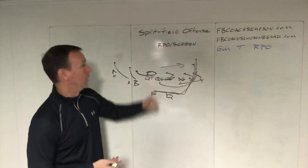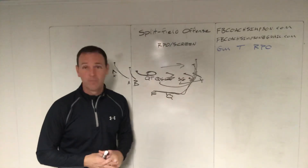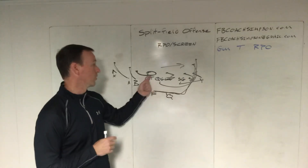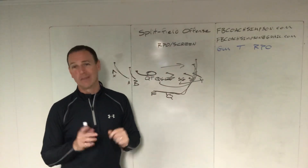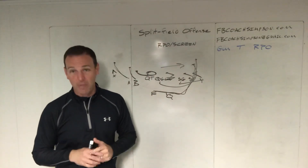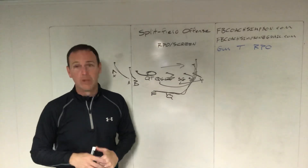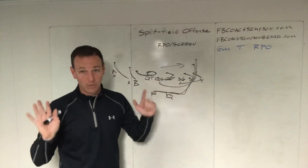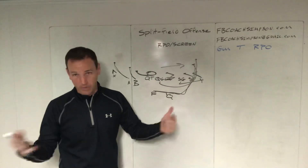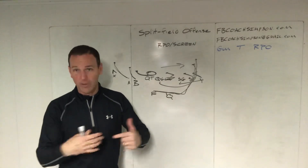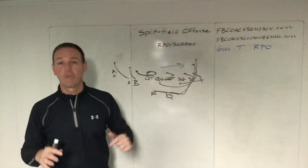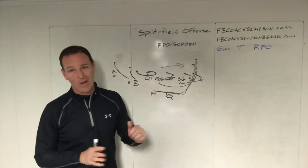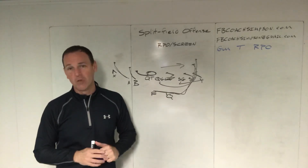The idea is we're going to run a split field look, get a look from the defense or look at a certain player, and make the decision that's best at the line of scrimmage. Our players are all running the same thing that was called — either from the huddle or from their armband. Split field offense. It's a beautiful concept and there are lots of different ways you can run this.